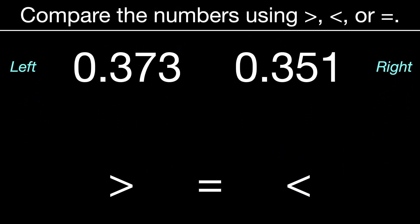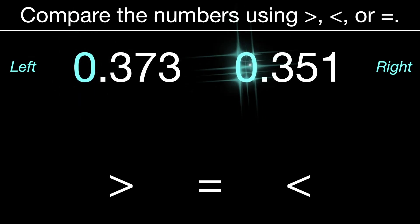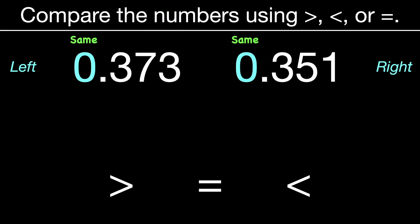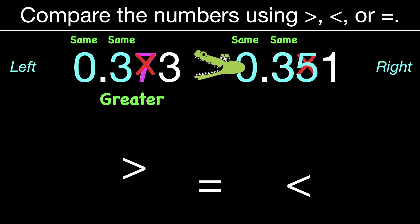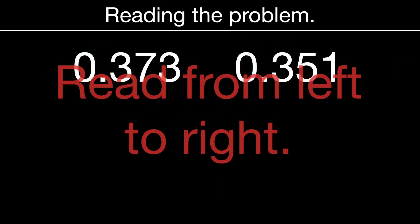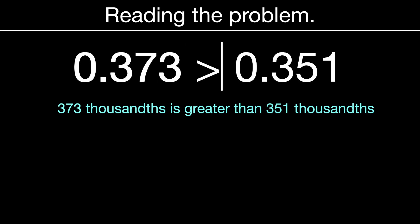Let's look at the same numbers in a little more detail — how did we know one is larger than the other? We compare working from left to right. Zero and zero are the same. Three and three are equal. But when you get to the seven and the five, they're not the same at all. The seven is greater, and therefore 373 thousandths is greater than 351 thousandths.